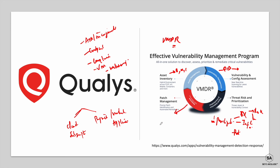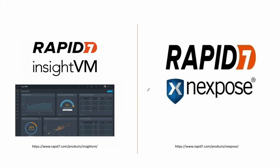Qualys also offers embedded patch management, meaning you can purchase a patch management license and patch your vulnerabilities directly within the Qualys platform — no third-party solution needed. This ability to perform patching natively from within the platform is something that sets Qualys apart from other vulnerability management solutions.